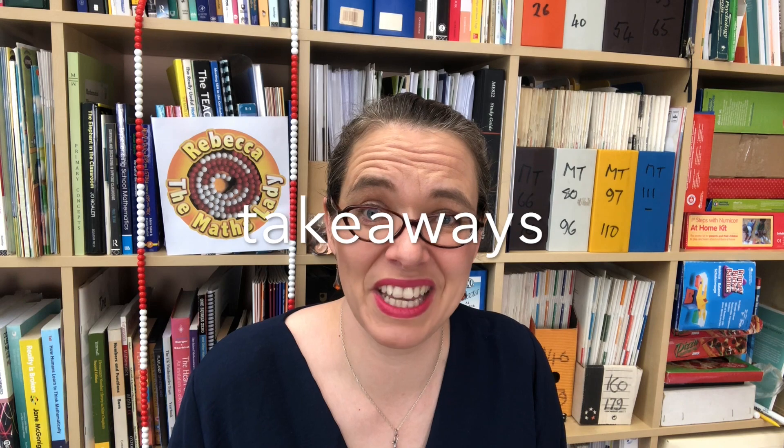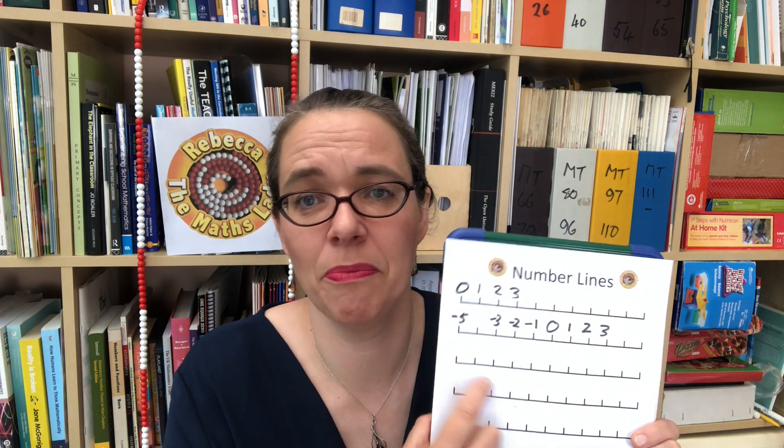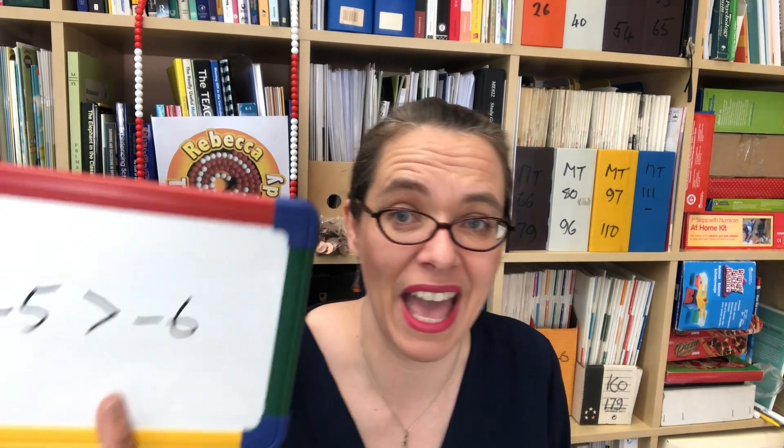Your takeaways from this video: children need to develop two images of negative numbers clearly — one on the number line and the other on a temperature scale — and they need to be able to connect those images and see that it's all the same maths. It's great to explore negative numbers in other situations too, like debt and money. It's also really important to get children to compare negative numbers and use the structure of the number line to know which is the larger number. For extension, think about comparing temperatures and ranges of temperatures around the world.